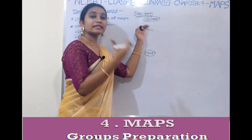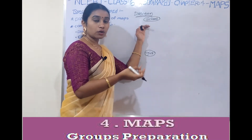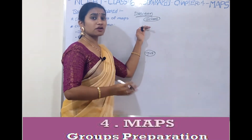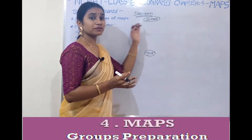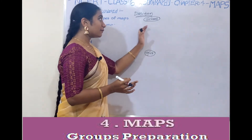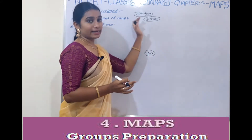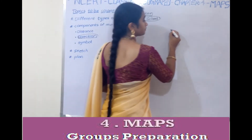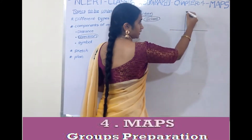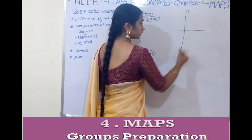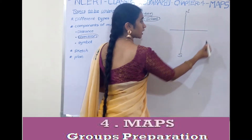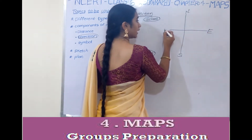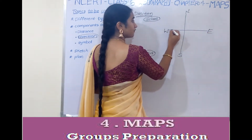Direction is indicated as north, south, west, and east. North, south, east, and west are the four main directions shown on a map.